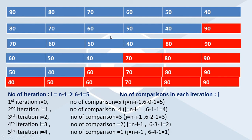Now consider one more property for implementing bubble sorting. How many comparisons are needed to move the largest element to its last position? With 6 elements, we compare positions 0&1, 1&2, 2&3, 3&4, and 4&5 — five comparisons. After finishing five comparisons, the largest element (90) comes to its exact position. So at the end of the first iteration, the largest element comes in its exact position.